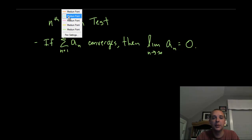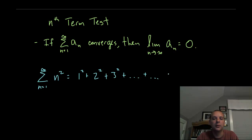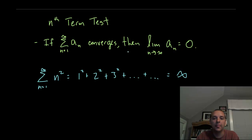Here's a simple example. Let's say we have the sum from n equals one to infinity of n squared. When you start adding these successive terms, you get one squared plus two squared plus three squared. It's pretty clear that if you do this forever, this is not going to add to a finite number — it's going to continue to grow and will be infinity. So it's clear that if the terms are not going to zero, there's no way it can converge.